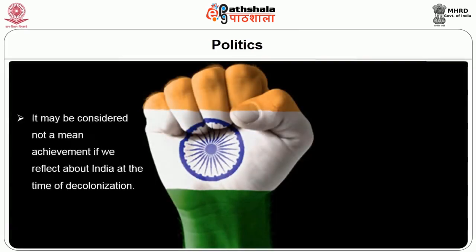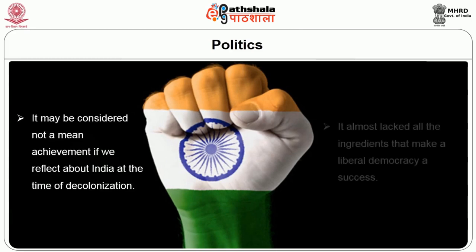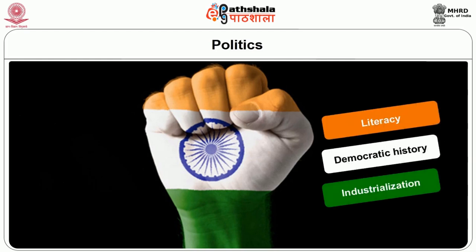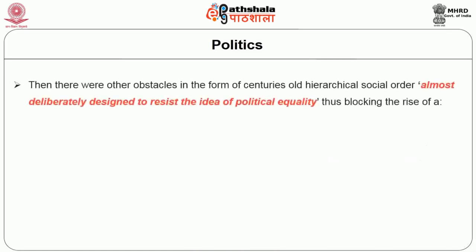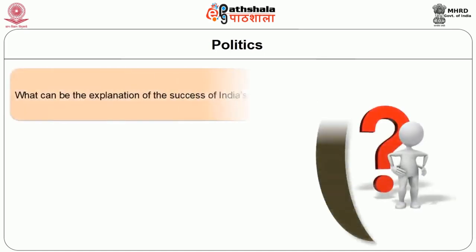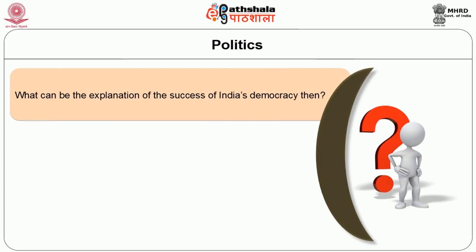It may be considered no mean achievement if we reflect on India at the time of decolonization — India almost lacked all the ingredients that make liberal democracy a success. It suffered from low levels of literacy, lack of democratic history, and lack of industrialization. There were other obstacles in the form of centuries-old hierarchical social order, almost deliberately designed to resist the idea of political equality, thus blocking the rise of civil society. The post-partition period also flared up cultural and religious distinctions.